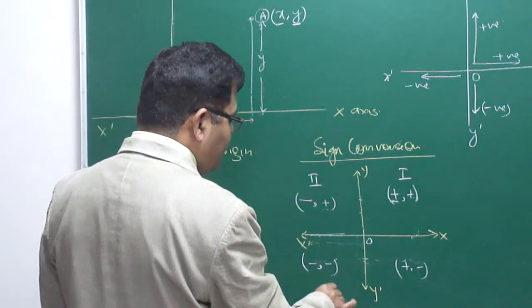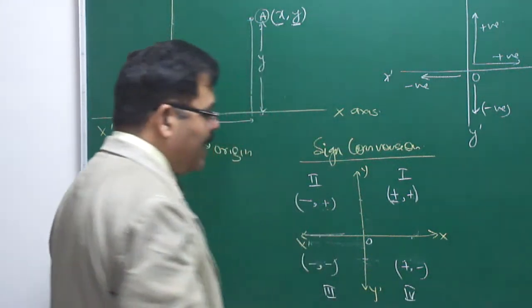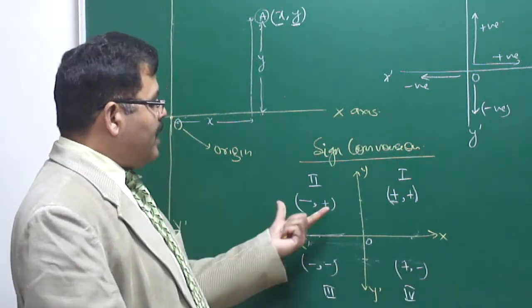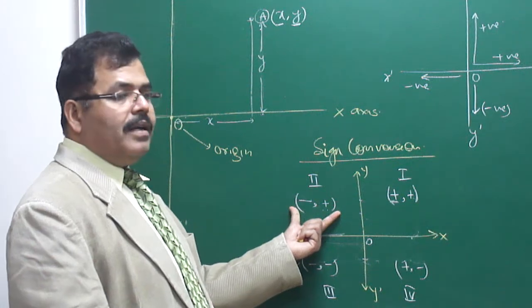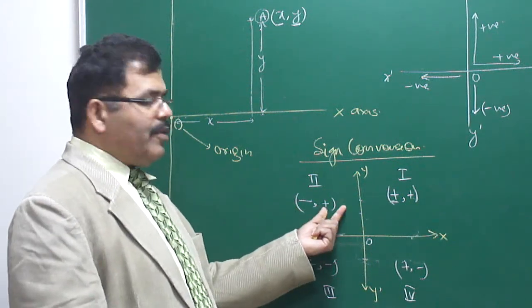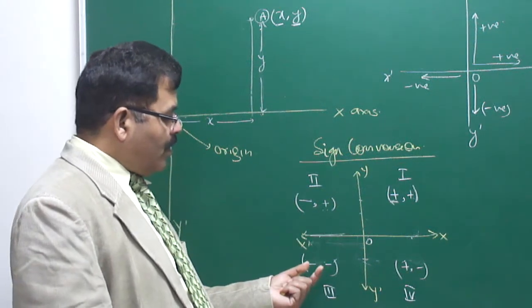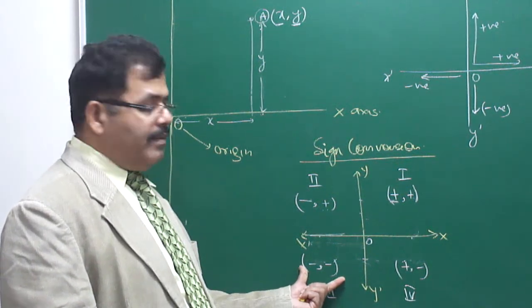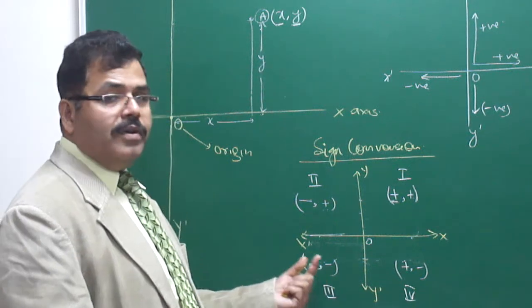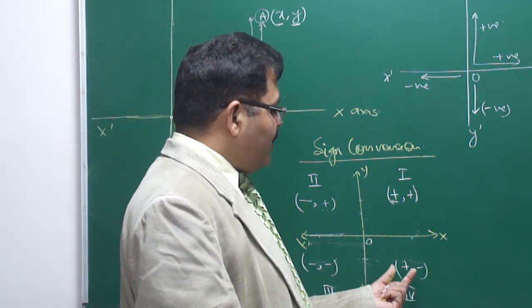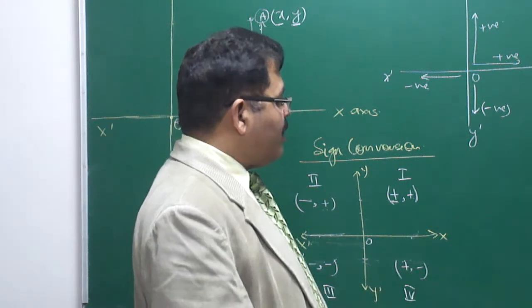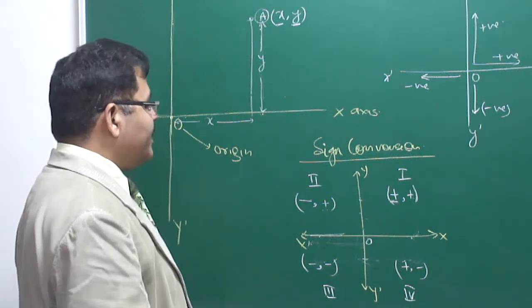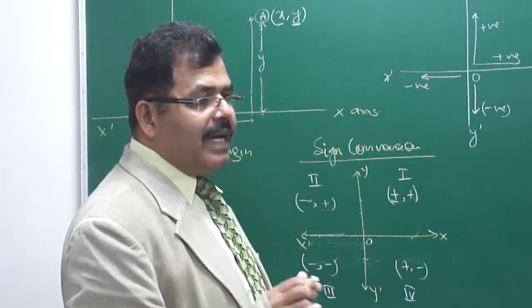So we have learned the four-quadrant system. First quadrant: both coordinates positive. Second quadrant: X-coordinate negative, Y-coordinate positive. Third quadrant: both coordinates negative. Fourth quadrant: X-coordinate positive, Y-coordinate negative. On the basis of the nature of the coordinates we can decide in which quadrant a particular point lies.